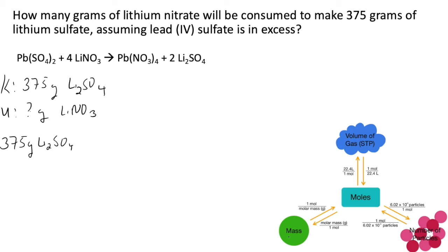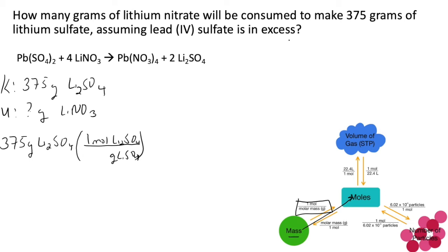We are going to begin with our given of 375 grams of lithium sulfate. Anytime we are given anything other than moles, we want to convert that into moles, which means we will use molar mass with moles of lithium sulfate at the top and grams of lithium sulfate at the bottom. Now we calculate the molar mass for lithium sulfate. Looking at the chemical formula, I have two lithiums — each lithium has a mass of 6.94 — giving a total of 13.88 grams per mole. Next, I have one sulfur at a mass of 32.06.